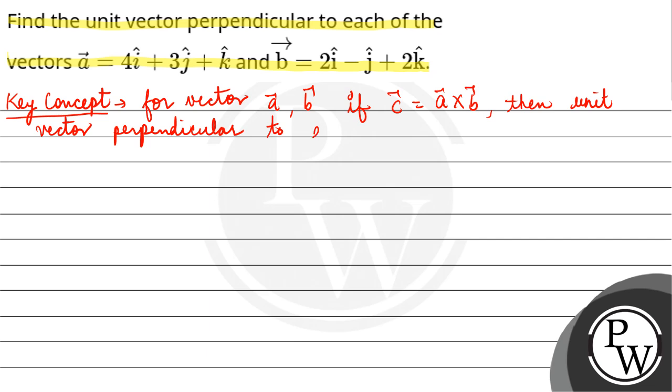to each a and b will be c cap. So here a vector is given as 4i + 3j + k, and b vector is 2i - j + 2k.